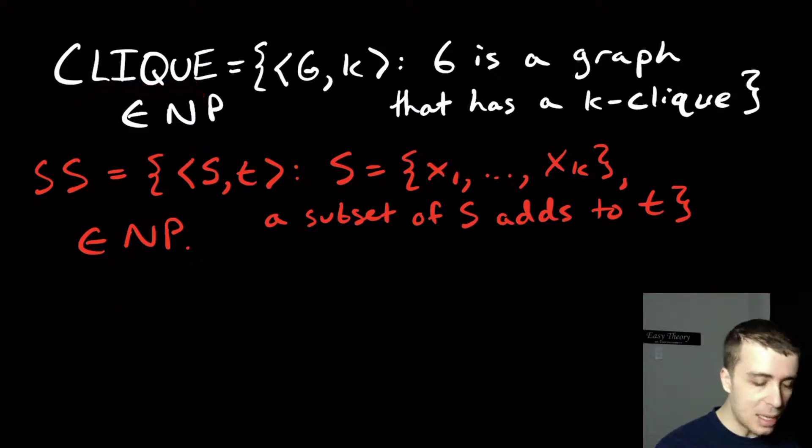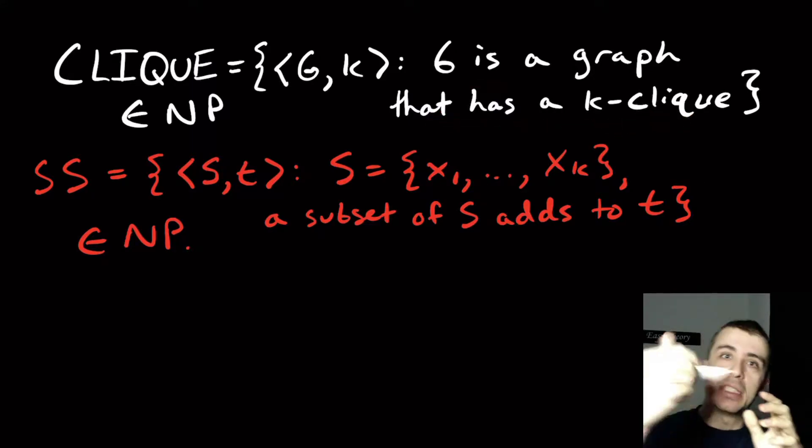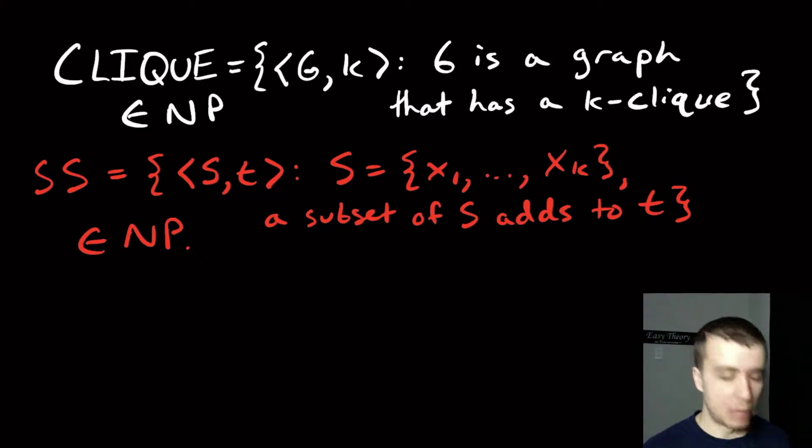So the first one is CLIQUE, and that's all the pairs of graphs paired with integers such that the graph has a k-clique in it. So remember, a k-clique is a set of k vertices that have all the edges between those k vertices present.